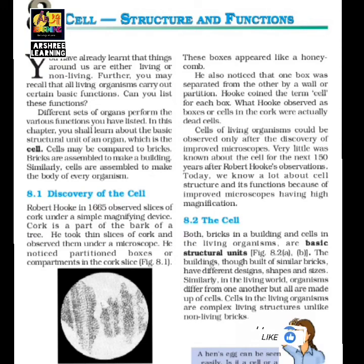He also noticed that one box was separated from the other by a wall — there were many boxes separated by a partition. Robert Hooke coined the term and called it a cell. Cells of living organisms could be observed only after the discovery of improved microscopes. At the time of the original discovery, there was no powerful microscope; only later, when stronger microscopes were made, was the detailed structure of the cell studied.